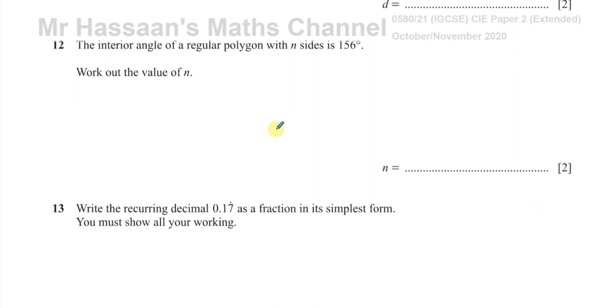The question here is about polygons. It says the interior angle of a regular polygon with n sides is 156 degrees. Work out the value of n.